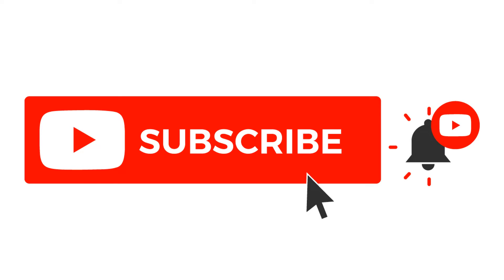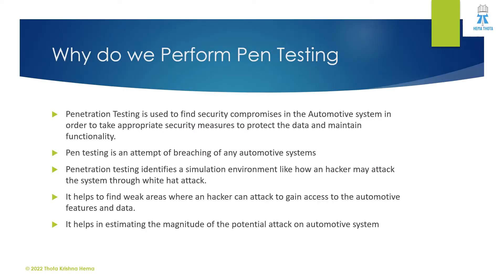Why do we perform pen testing? Pen testing is something like finding out the security compromises in automotive systems in order to take appropriate security measures to protect the data and maintain functionality. It is an attempt at reaching any automotive system, performed in a simulated environment — like how a hacker may attack the system through white hat hacking.